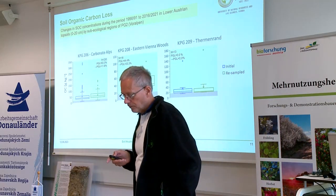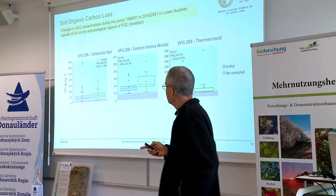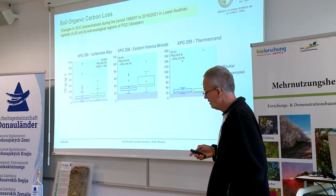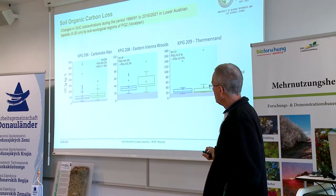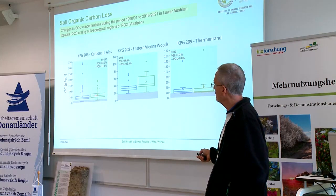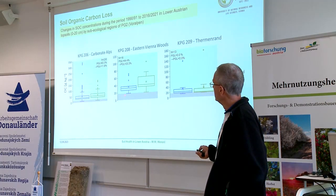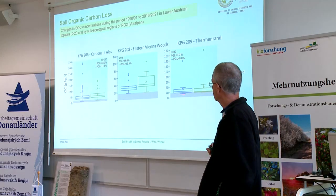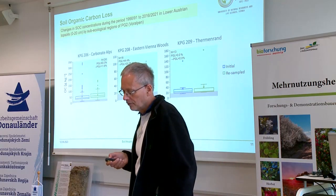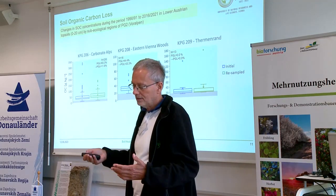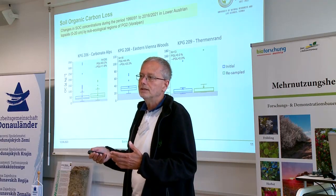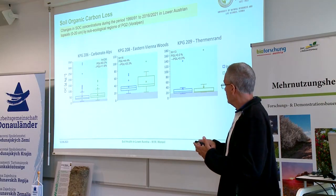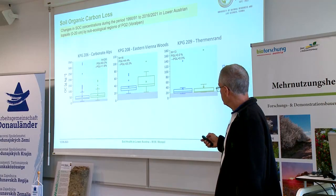If we now come to the first soil threat — loss of organic carbon — and look at data from some of the ecological subregions, we can see they are quite different in terms of development over time and also the initial level of organic carbon. In some regions we find quite some increase of organic carbon during the last 30 years. Other regions show stable results, indicating this high variability in ecological conditions and also in related farming practices, which makes a difference.